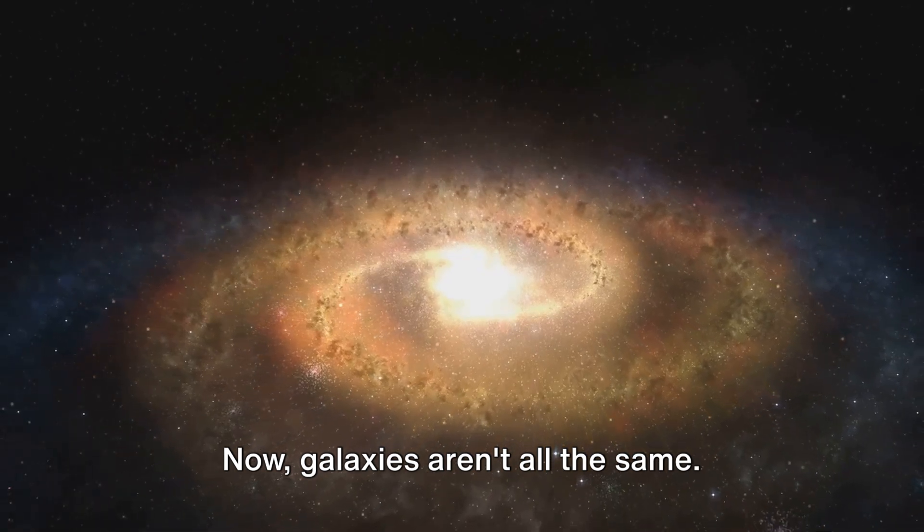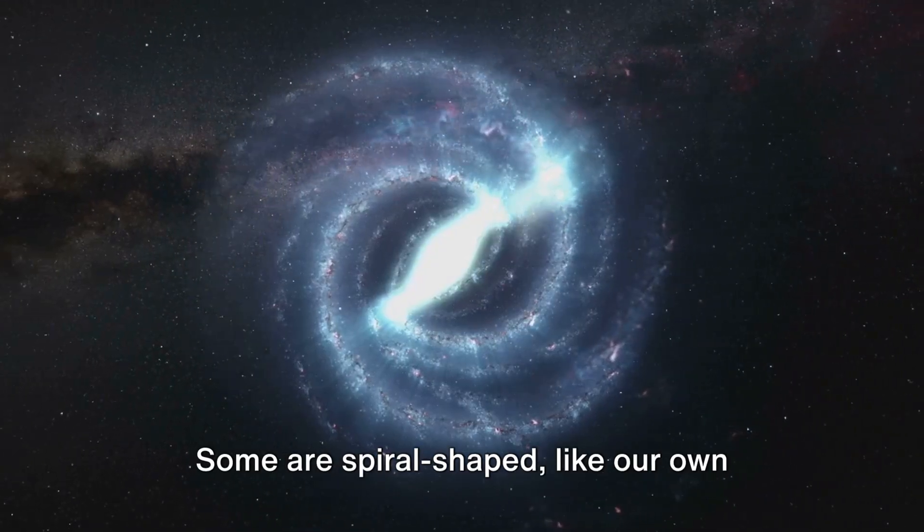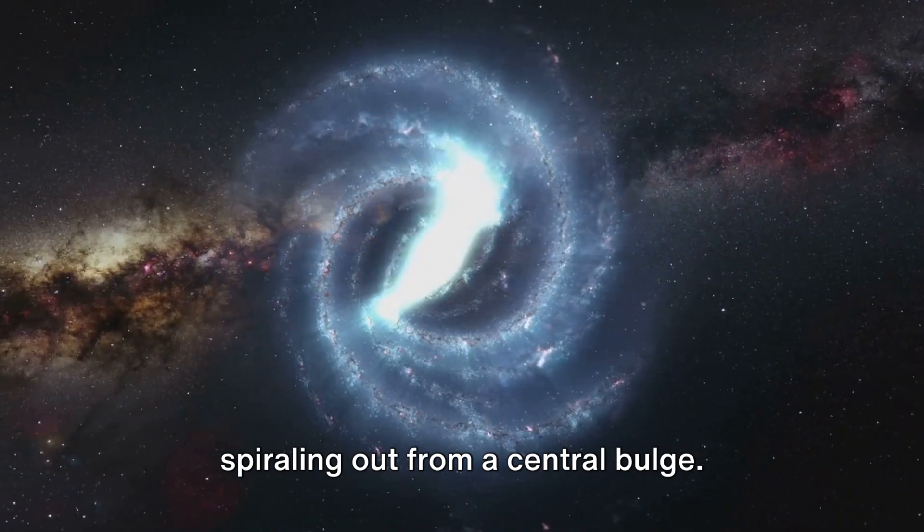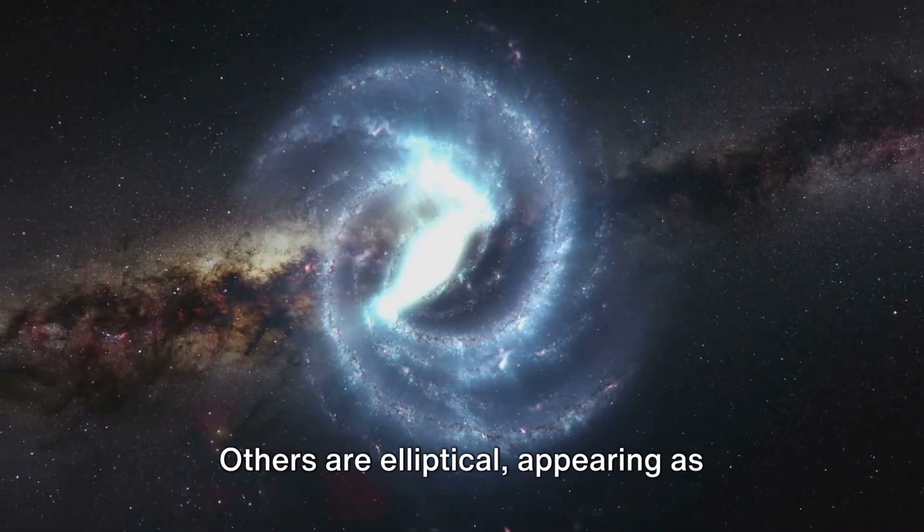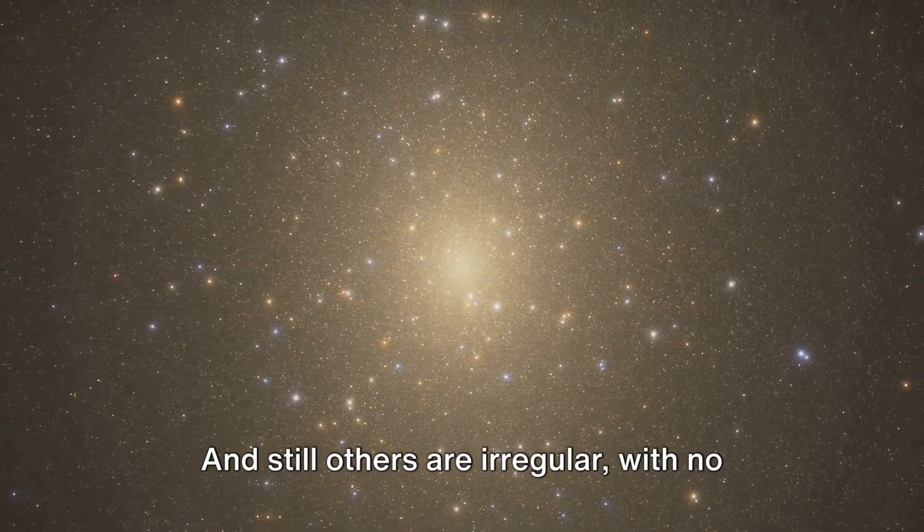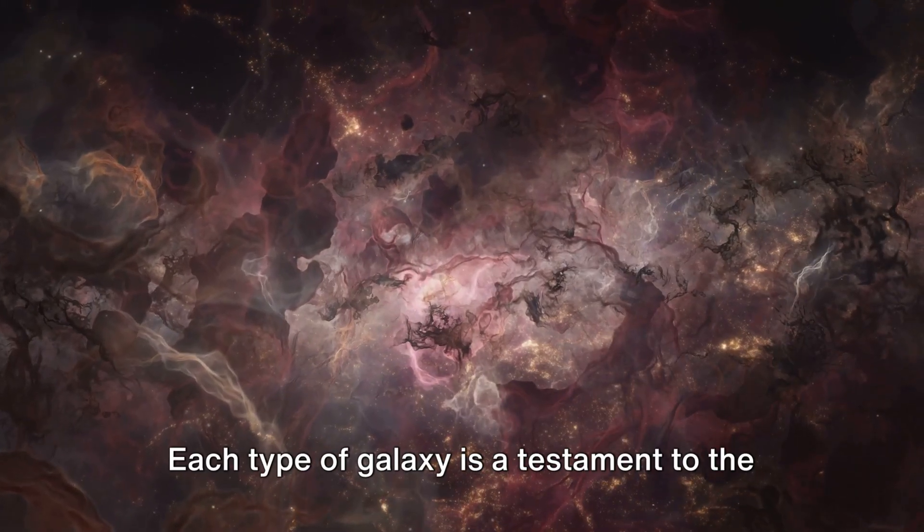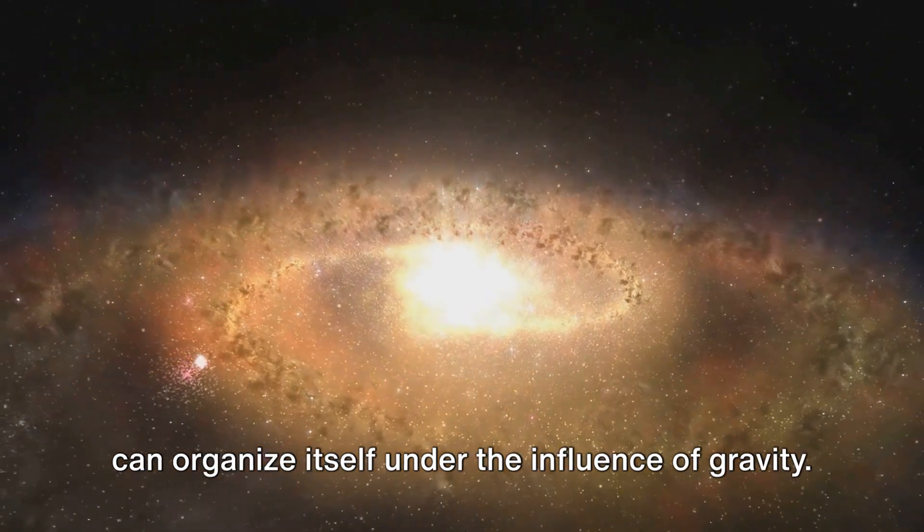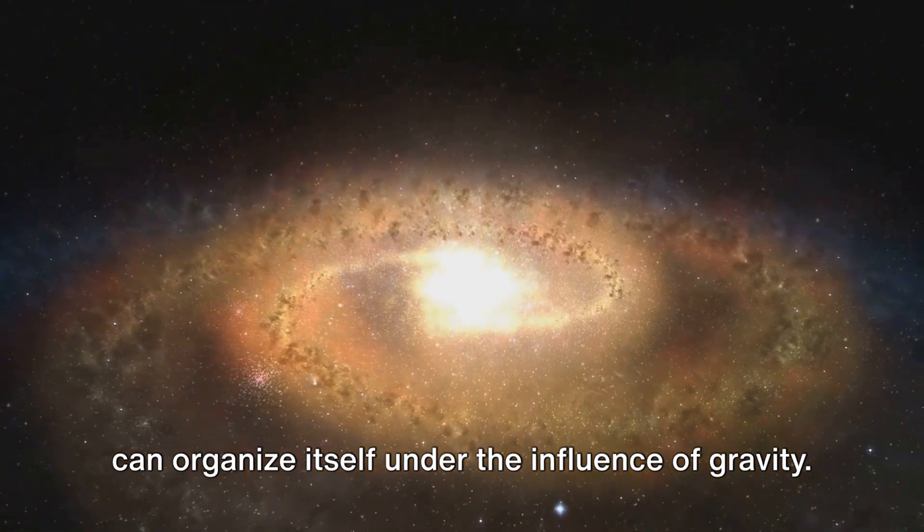Now, galaxies aren't all the same. Some are spiral-shaped, like our own Milky Way, with arms of stars and gas spiraling out from a central bulge. Others are elliptical, appearing as large, round masses of stars. And still others are irregular, with no defined shape. Each type of galaxy is a testament to the complex and varied ways in which matter can organize itself under the influence of gravity.